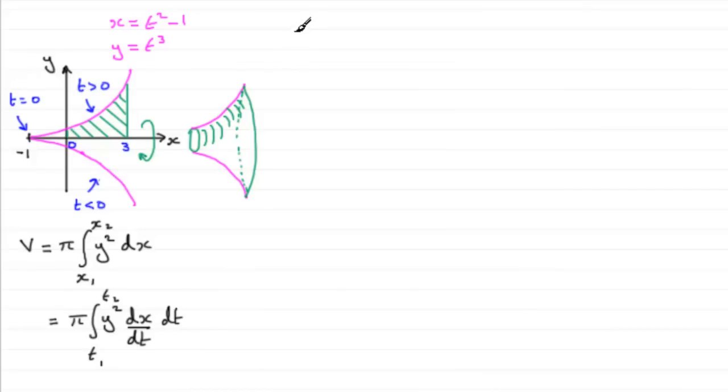For this problem, the volume V = π ∫ y² (dx/dt) dt. The challenge is finding the limits now that we're integrating with respect to t. To do that, we use x = t² - 1 and look at what x values we're given.